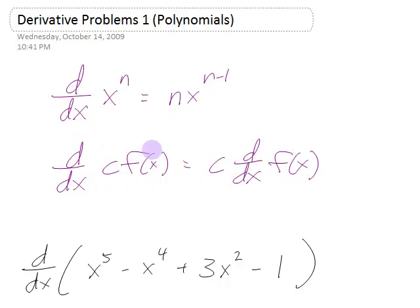The constant multiple rule says if you have a constant in front of your function, for example this 3 in front of the x squared, you can ignore it. Take the derivative of the function, like the x squared part, and then multiply the constant back in.